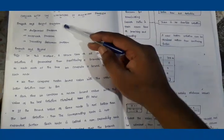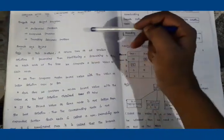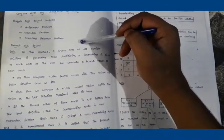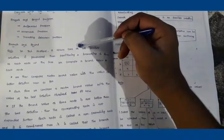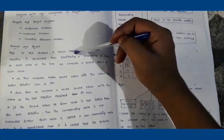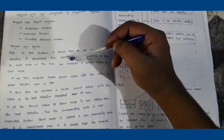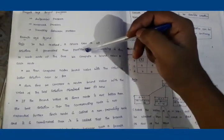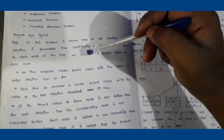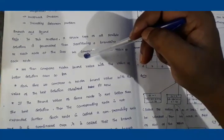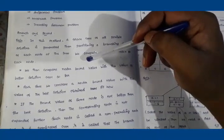First, let's look at the definition of Branch and Bound. We design a state space tree with all possible solutions, and then we partition — or branch — at each node of the tree by computing a bound value. The bound value is calculated for each node, and we compare bound values across nodes. From the node with the better bound value, branching continues further.